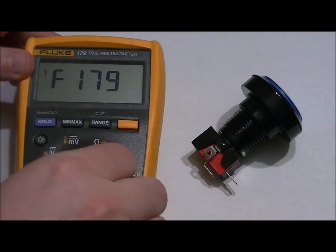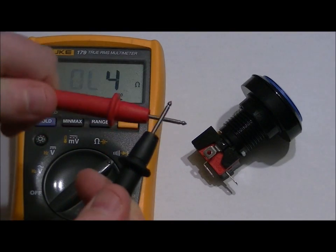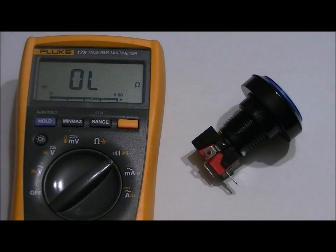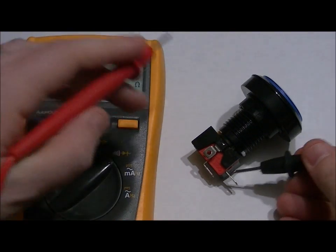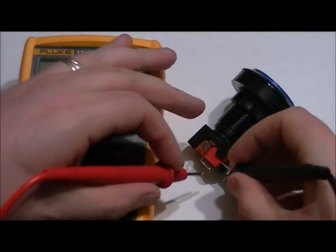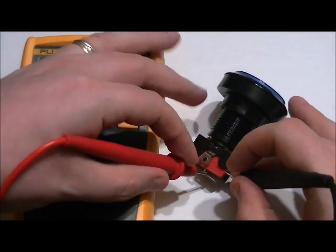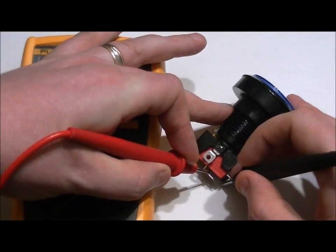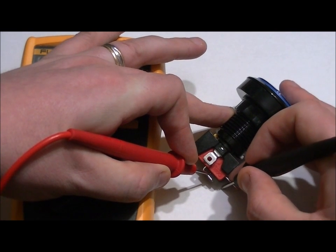I'm going to set up my trusty Fluke multimeter to test for shorts. I'm going to hold both leads over these two pads on the button. And I'm not getting anything until I press the button.